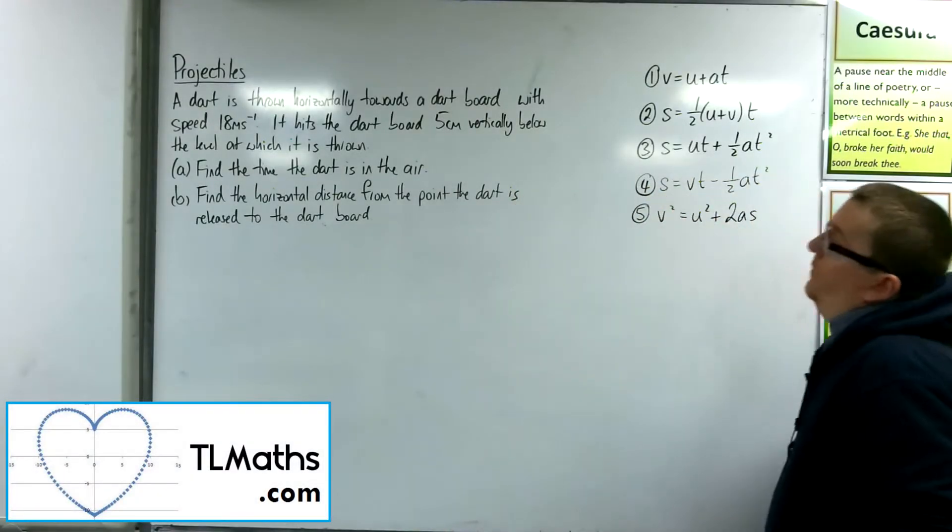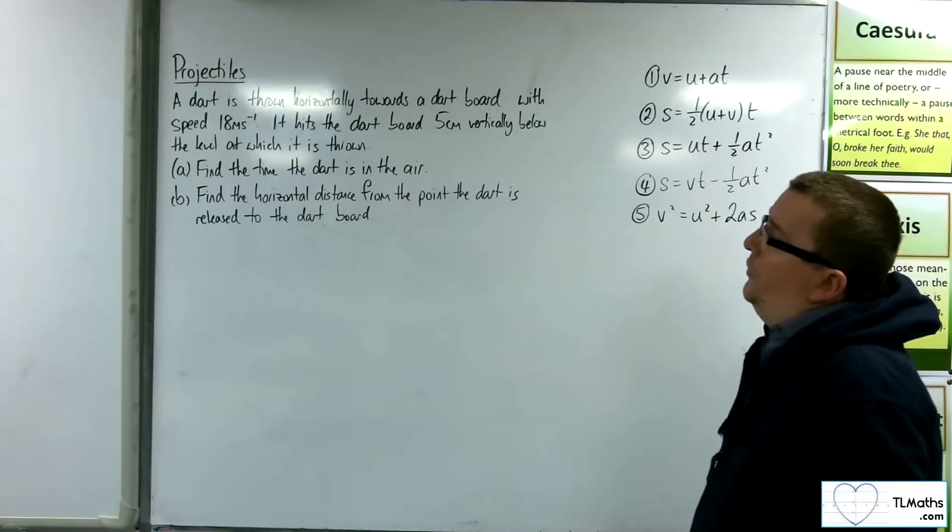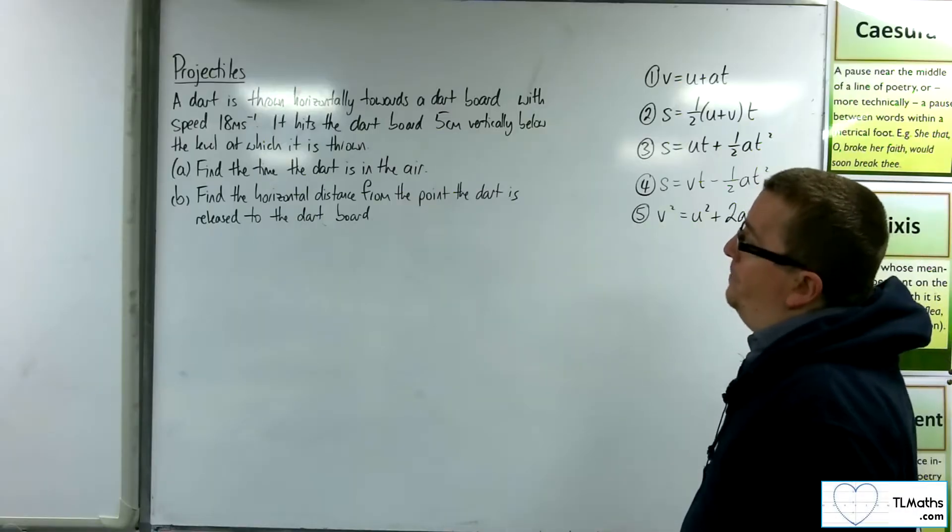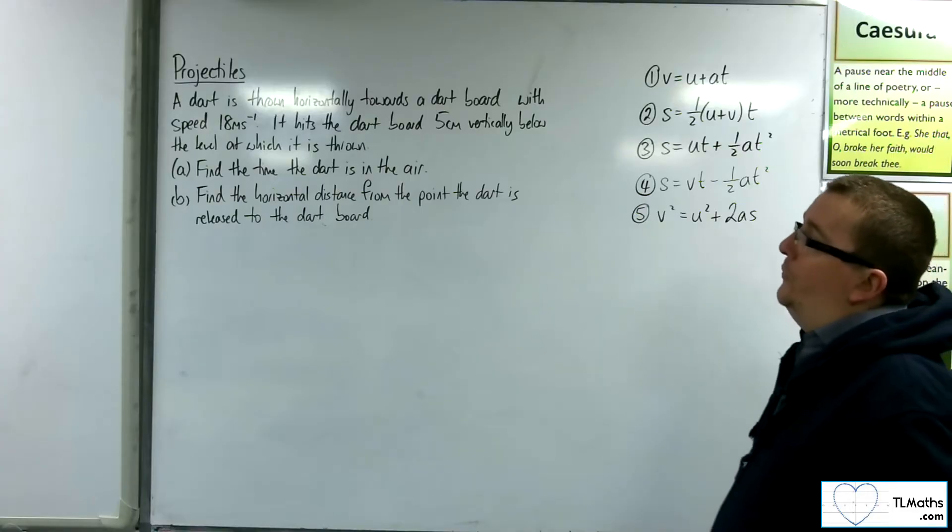So in this example, we have a dart that's thrown horizontally towards a dartboard with speed 18 meters per second. It hits the dartboard 5 centimeters vertically below the level at which it is thrown.